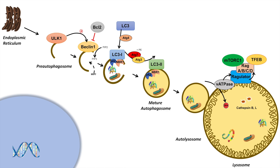When the cell is in a fed state, mTOR complex 1 is activated. When mTOR complex 1 is activated, it phosphorylates and inhibits ULK1. On top of that, if insulin is present — and insulin is typically present during a fed state — insulin activates AKT, which indirectly activates mTOR complex 1 via a couple of different proteins.